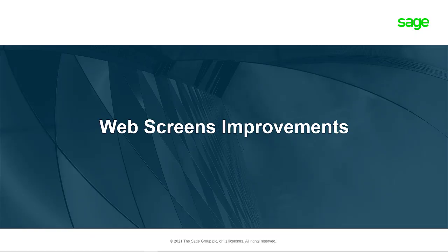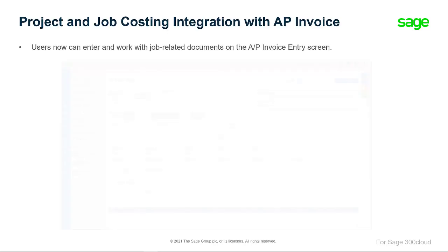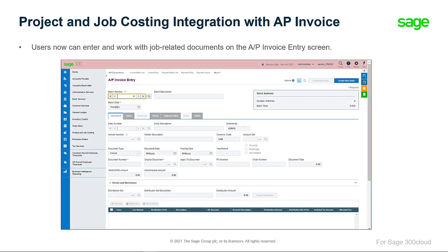First, let's have a look at web screens improvements. If you use Sage 300 Project and Job Costing to manage contracts, you can now use the web screens to work with job-related documents in Accounts Payable. The Accounts Payable Invoice Entry screen includes a job-related option.